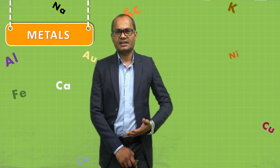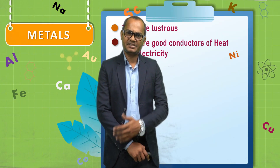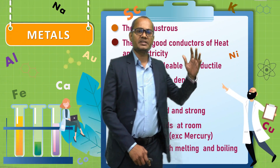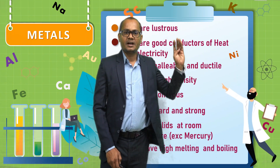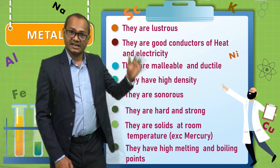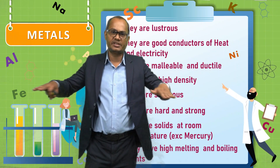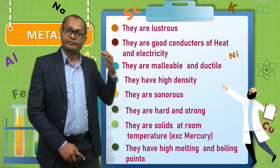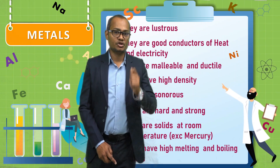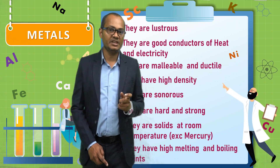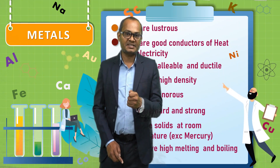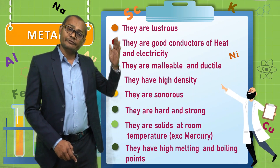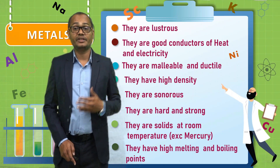Now let us look at certain properties of metals. Metals are lustrous. They are good conductors of heat and electricity. They are malleable and ductile, meaning they can be beaten into thin sheets and drawn into very fine wires. They have a very high density. They are sonorous, meaning that if you strike any metal, it is bound to produce a certain sound.